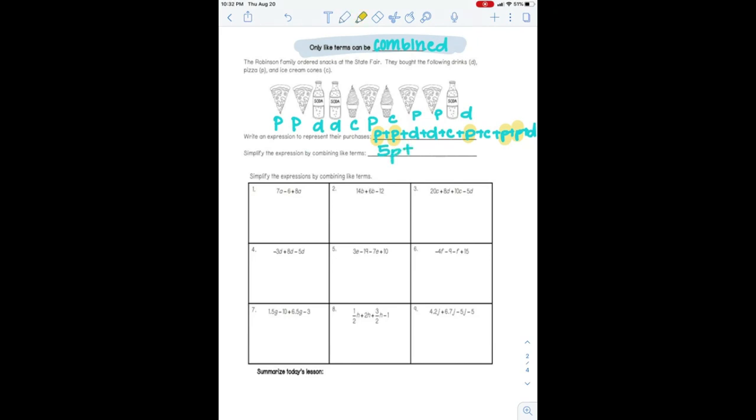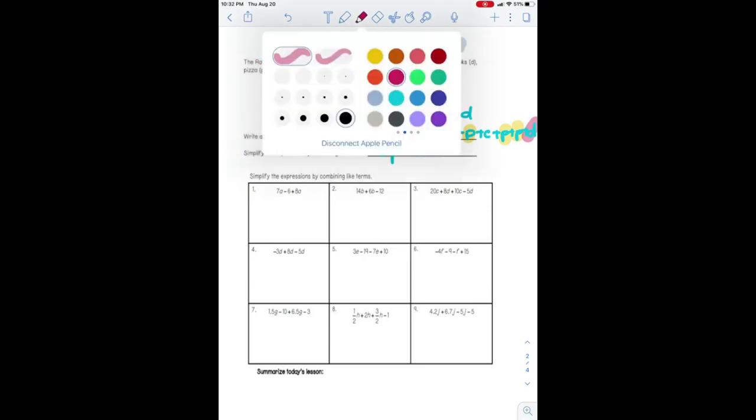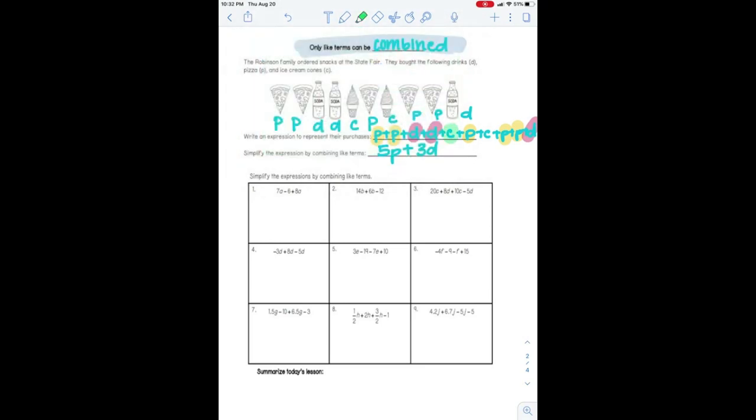Now I'm going to count how many D's I have. I've got 1, 2, 3. So I'm going to write that as 3D. And lastly, I'm going to count how many C's I have. I've got 1, 2. So I'm going to write that as 2C.